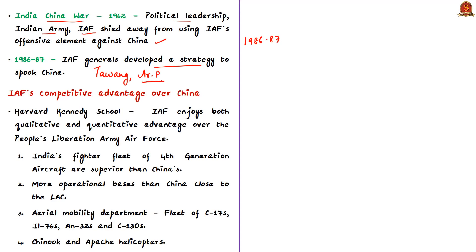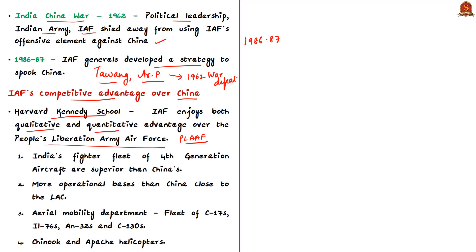An important element of that strategy was the use of helicopters and transport aircraft to facilitate deployment — at the same Tawang location where the IAF suffered defeat in 1962. The IAF even developed an offensive strategy to take the battle to the PLA's forward-most base in that sector, but according to the author, it was never put into use. The author notes that the IAF has a competitive advantage over China's PLAAF, reiterated by the Harvard Kennedy School through its recent operational assessments, which found the IAF currently enjoys both qualitative and quantitative advantage over China's Air Force across the Line of Actual Control.